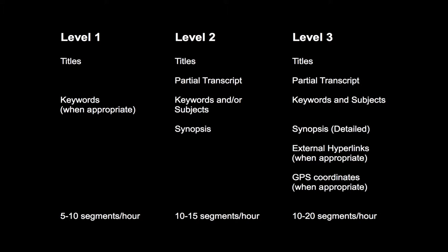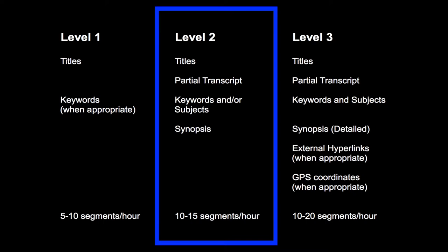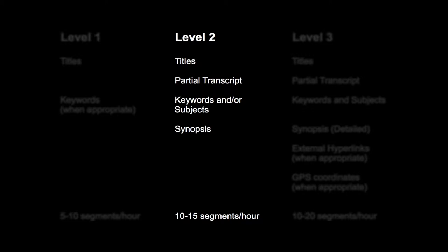A level 2 index provides a good balance between the sparse information of a level 1 index and the detailed, longer process of creating a level 3 index. A typical level 2 interview will contain approximately 10 to 15 segments per hour of interview time. Each segment must have a title. Level 2 indexes also contain keywords and/or subjects, as well as partial transcripts and a brief synopsis.